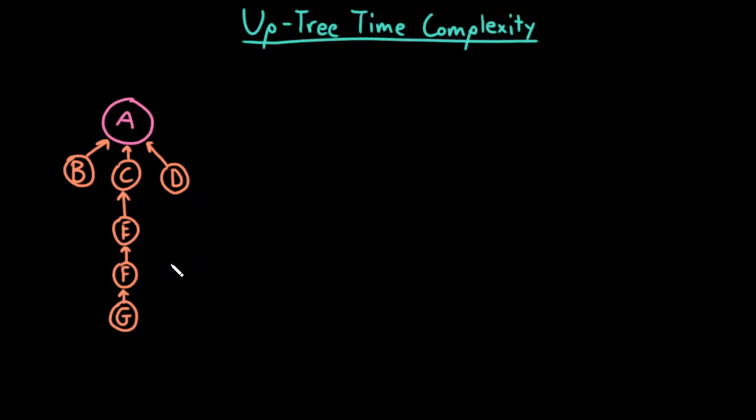So really even the union operation is just driven by two find operations, so some constant times the time complexity of find. Or in other words, the union operation has the same time complexity as the find operation. So for us to come up with the time complexity it's sufficient for us to only consider the time complexity of a find operation.